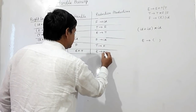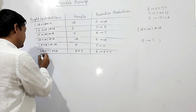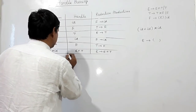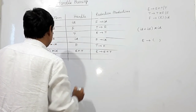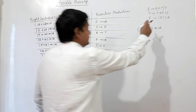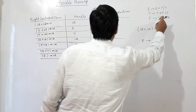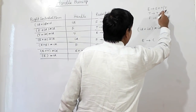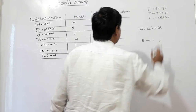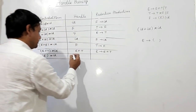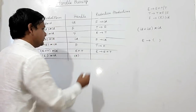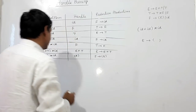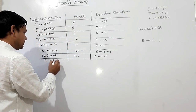So E plus T will be the handle, using the production E produces E plus T. So it will be E, close bracket star id. Now we are finding the production F produces bracket E. So the open bracket E close bracket is the handle here, and bracket E can be reduced to F. So it will be F star id.